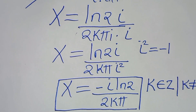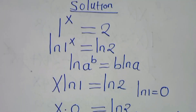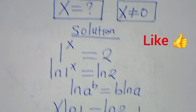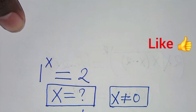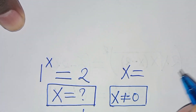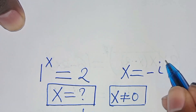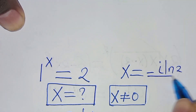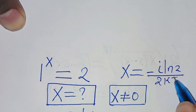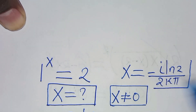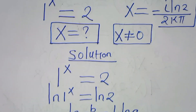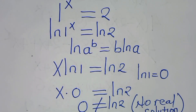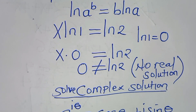So x is equal to negative i·ln(2) over 2kπ. If you have alternative methods to solve this, don't hesitate to showcase in the comment section. See you in the next video. Like this video and subscribe.